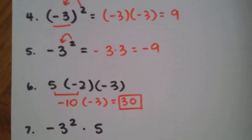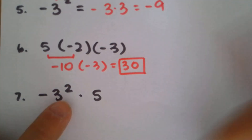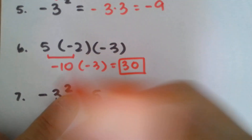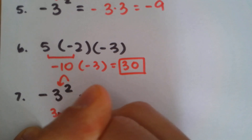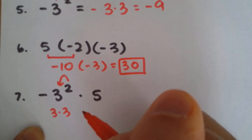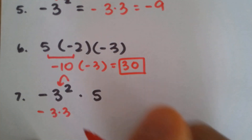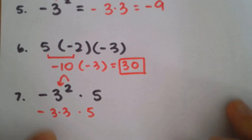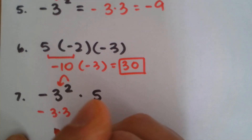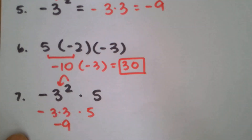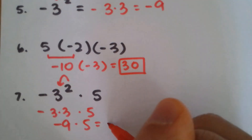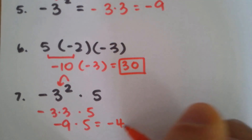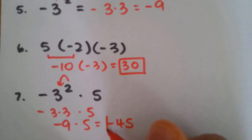For number seven, this exponent only duplicates the three — there are no parentheses. So this is actually three times three, then stick a negative sign there, and then multiply by five. Three times three is nine; with the negative, that's negative nine. And negative nine times five — negative times positive — gives you negative 45.